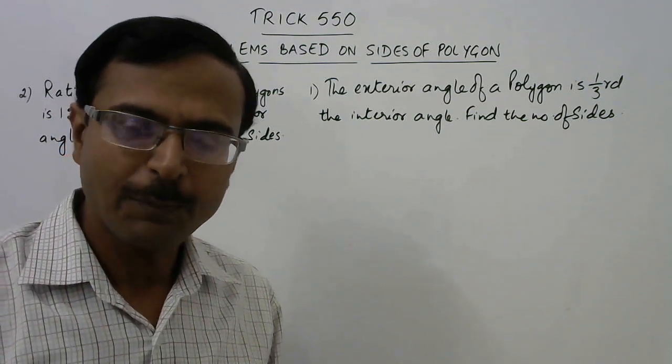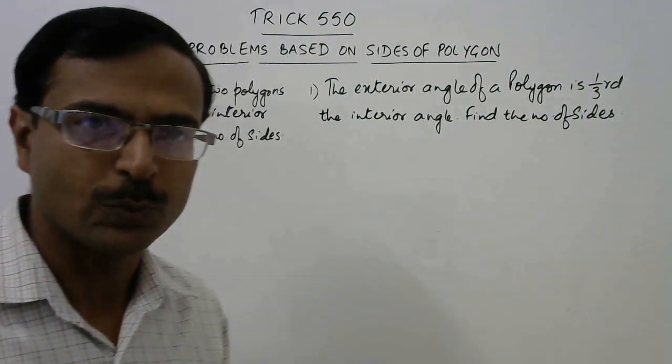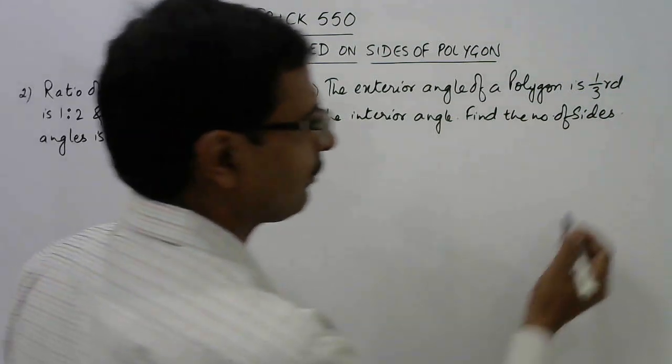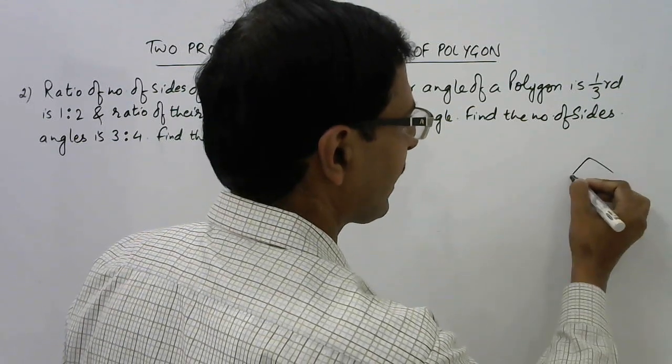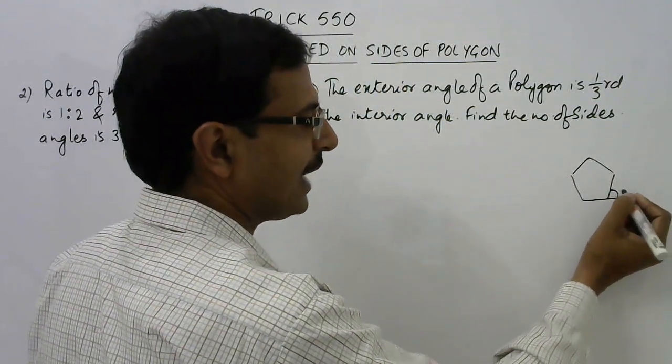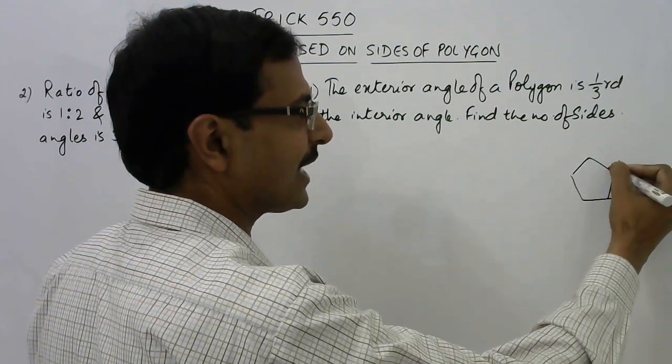Now, in case of a polygon, we need to know that the exterior angle of any polygon, like we have this polygon, a pentagon, and these are the exterior angles. Likewise, if there are five sides, there are five exterior angles.